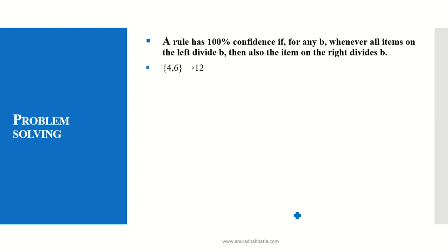We will see {4,6}. We find the LCM of it. The LCM is 12. {4,6}→B, so left hand side and right hand side both are divisible by the elements. We can say this will have 100% confidence.